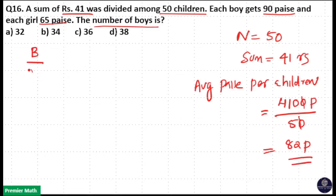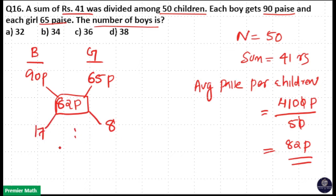Here each boy gets 90 paise and each girl gets 65 paise, and each child gets 82 paise. So when you subtract, 90 minus 82 equals 8, and 82 minus 65 equals 17. So 17 to 8 is the number of boys and girls ratio. We need to find out the number of boys.